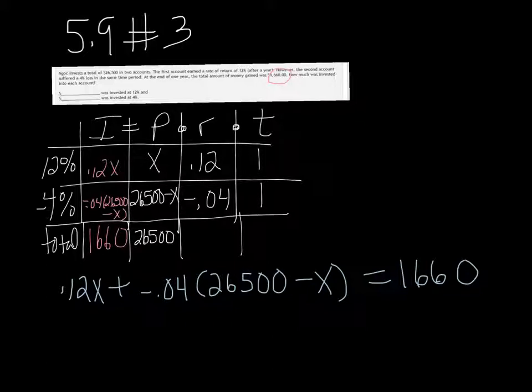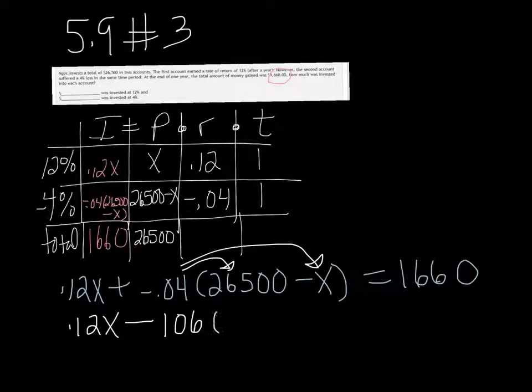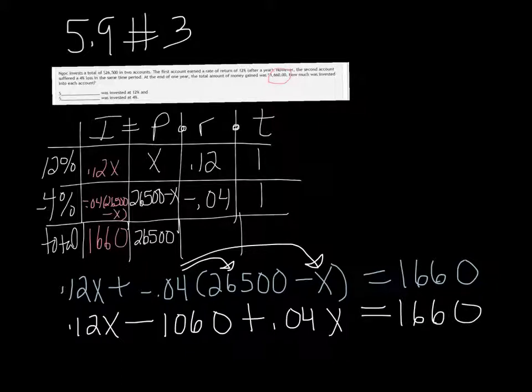So we just need to solve. We have distributing to do right here. What is 0.04 times 26,500? It's 1060. So 0.12X minus 1060, because there's a negative there, and then it's going to be plus 0.04X because the negative times the negative makes it positive. Be careful, because that negative gets distributed as well. We can combine like terms on the left and get 0.16X, if we add 0.12 to 0.04, minus 1060 is going to give us 1660.